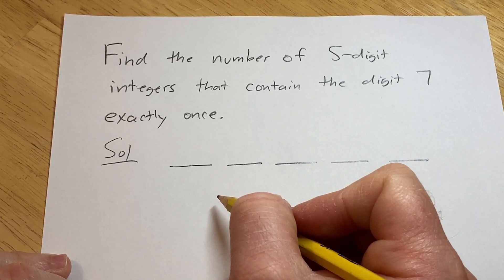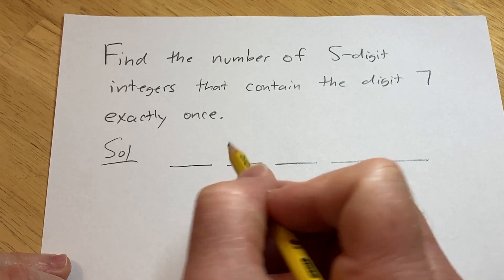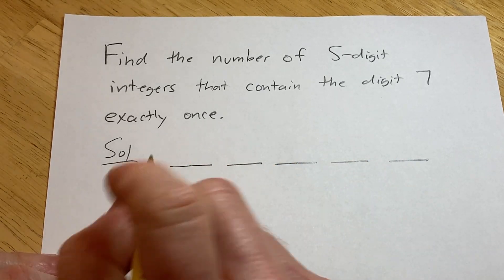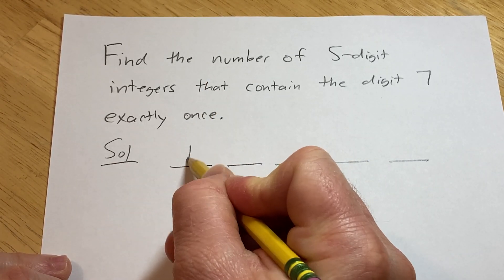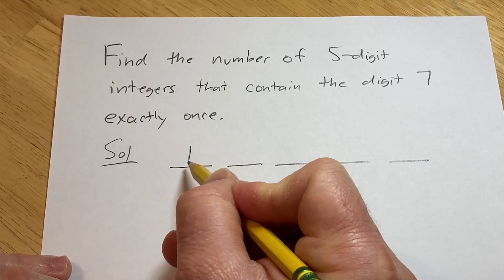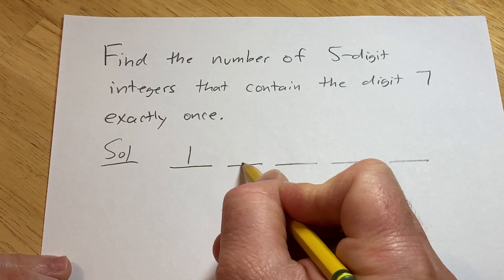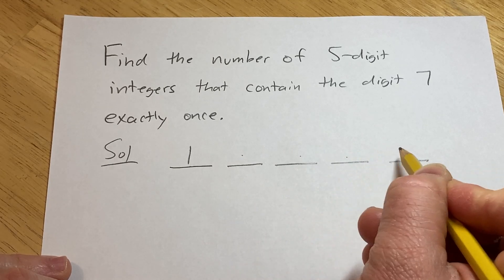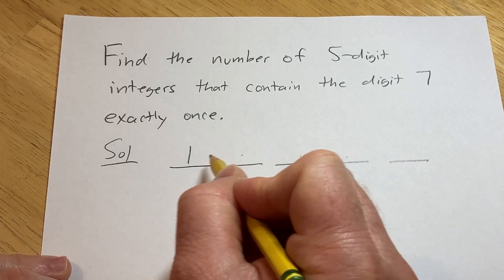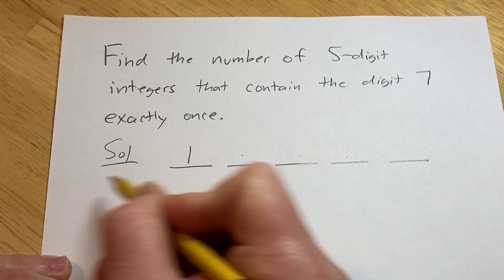So if the 7 comes first, that's pretty simple. Then there's one way to choose the first digit because the 7 comes first, and then there's nine ways to choose all of the other digits because there's 10 digits total, right?